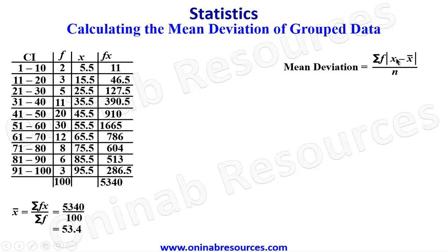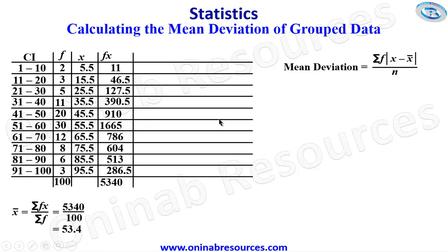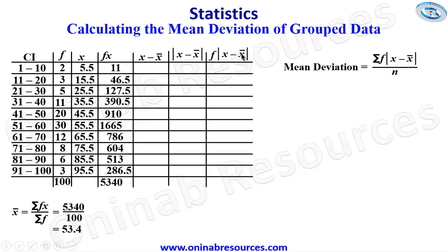We now go ahead to find x minus x-bar and its absolute value, creating three more columns: x minus x-bar, the absolute value of x minus x-bar, and f times the absolute value of x minus x-bar. Starting with x minus x-bar: 5.5 minus 53.4 gives negative 47.9; 15.5 minus 53.4 gives negative 37.9.